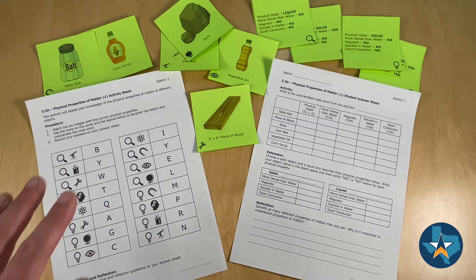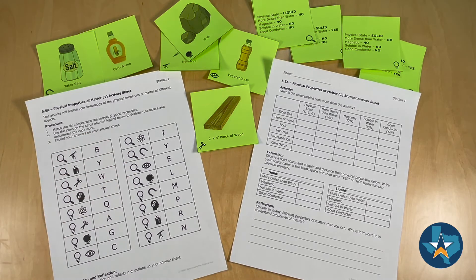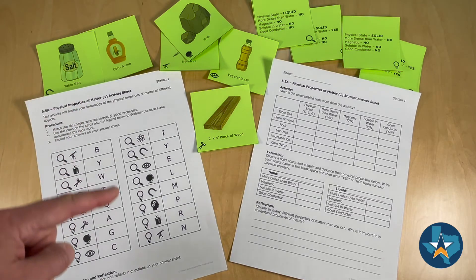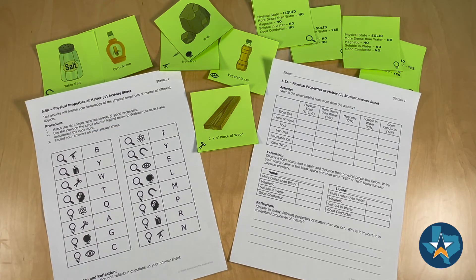Let's look back at the activity sheet. Students will be given 12 different cards and need to match up the images with the correct physical properties of matter card. There are icons on each of the matching pairs that students will use against the cipher to unveil a secret word.